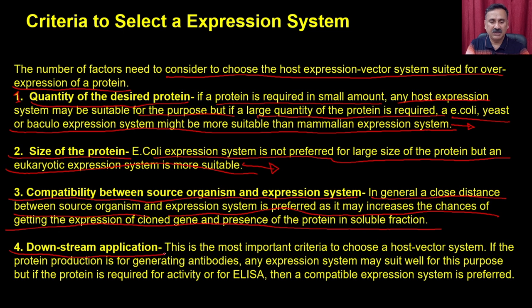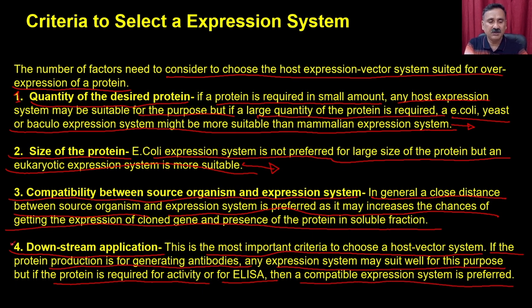Then we have compatibility — compatibility between the source organism and the expression system. In general, a close phylogenetic distance between the source organism and the expression system is preferred, as it increases the chances of getting expression of the cloned gene and the presence of protein in the soluble fraction. The downstream application is the most important criteria. If the protein production is for generating antibodies, any expression system may suit, but if the protein is required for activity or for ELISA, a compatible expression system is preferred. You cannot use a bacterial expression system when the downstream product is for vaccine development or antibody generation, because bacterial products can cause allergic reactions in patients.